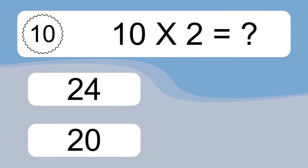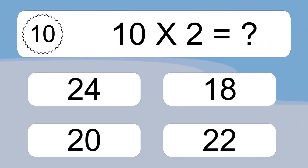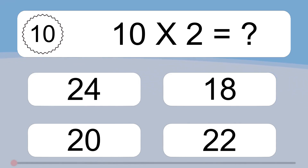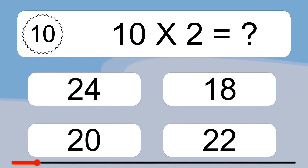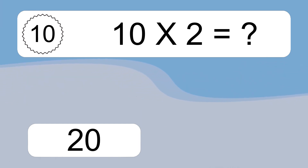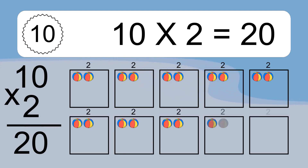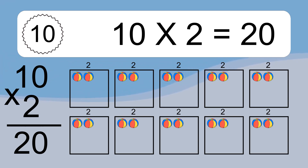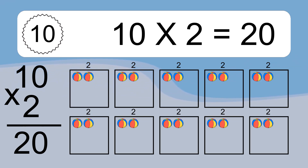10 times 2 equals what? 10 times 2 equals 20. We have 10 boxes, and each box has 2 colorful balls inside. If you count all the balls in all the boxes together, you will have 10 times 2 balls. This equals 20 balls.